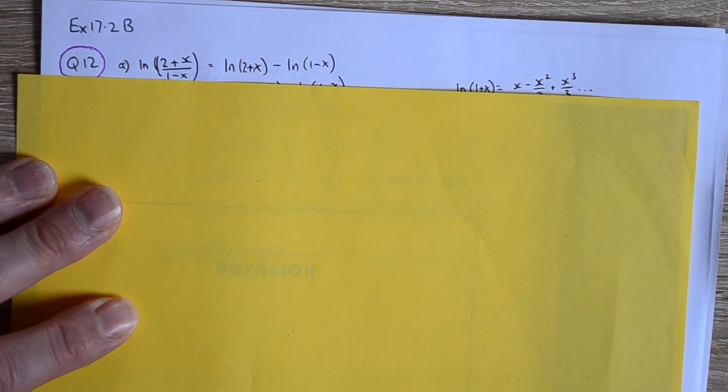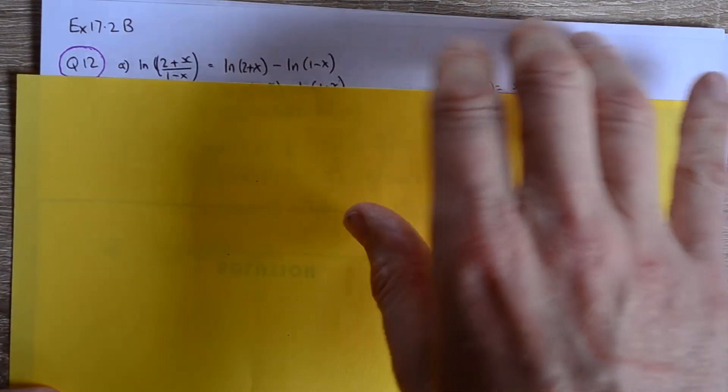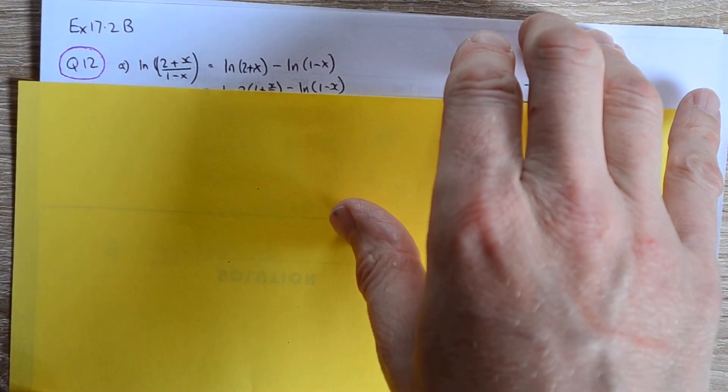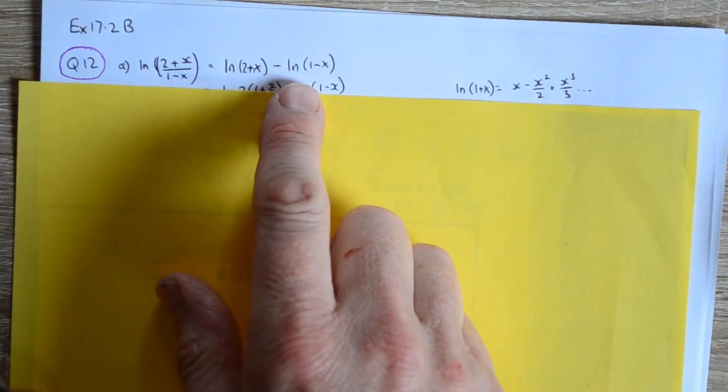Question 12. So here we've got another natural logarithm as a quotient, and so what we can do is split it up into the difference between these two natural logs.